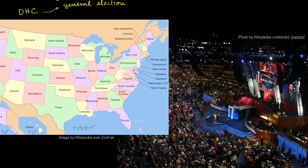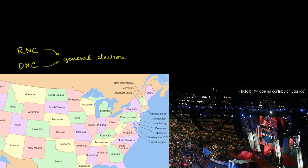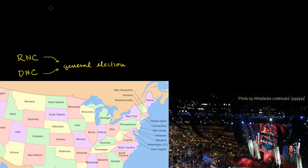That's because each of the states have their own selection process for picking a candidate. And as we get the results from those selection processes, we know how many delegates they're going to send to the convention and whom they are going to vote for. There are two ways that they can select those candidates or those delegates for the national convention — they could either run a caucus or they could run a primary.